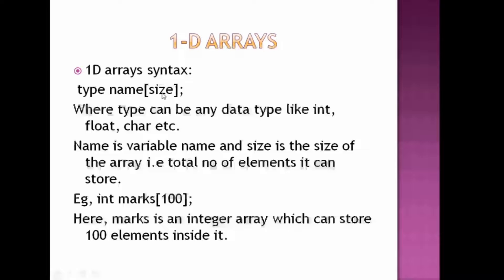The type can be float, character, or integer, and the name you can choose according to your convenience. For example, int marks[100]: here the data type is integer, the name of the variable is marks, and in the square bracket we mention 100 as the size. This statement basically tells the compiler to create an array of integer type named marks, and it will reserve 100 × 2 = 200 bytes of memory, all in contiguous memory locations.